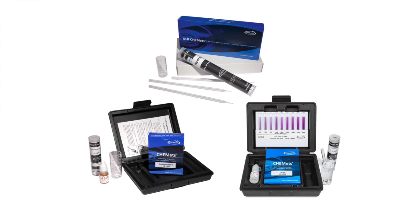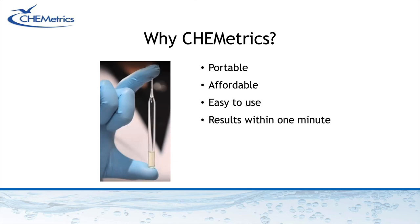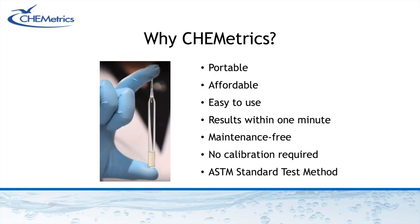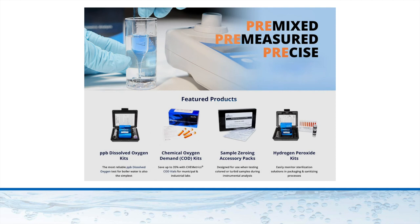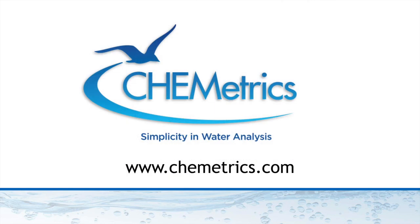There are a whole host of advantages that come with using Chemetrix dissolved oxygen testing products. They're portable — small enough to carry a kit in one hand and hold an ampoule between two fingers. They're affordable, easy to use, with instructions an unskilled operator can read in less time than it takes to run the whole test, delivering results in one minute. These kits provide everything needed with no maintenance and no calibration required, and they meet the ASTM standard test method. Chemetrix has earned a reputation for manufacturing world-class, easy-to-use DO test kits with sensitivity down to two parts per billion, making life easier for plant operators for more than half a century. Chemetrix — for simplicity in water analysis.